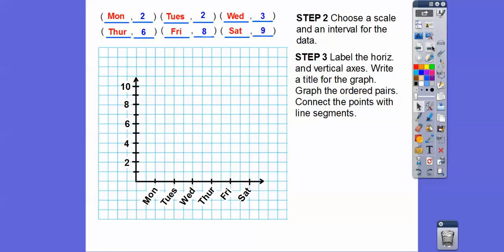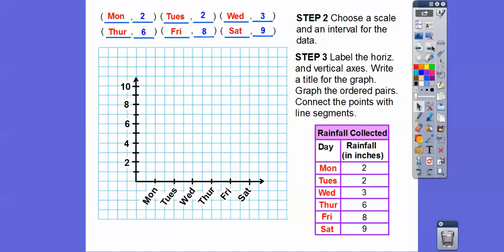So now we're going to label the horizontal and vertical axes and write a title for the graph. And then graph the ordered pairs and connect the points with the line segment. So here is our table that they gave us right here. So this will be our title, rainfall collected. Down here is our days. So this is each day. Over here, it's going to be the Y column, the second column right here, rainfall in inches right there. So there's our title right up there. Here's the X axis is the day, and the Y axis is the rainfall in inches right there.